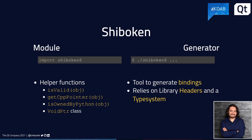Since we briefly talked about the dual functionality of Shiboken, on one side you have the module with functions that may access the C++ pointer for the underlying objects, check ownership, or provide abstractions like the void pointer. On the other hand, the generator is mainly used to generate bindings for C++ projects.